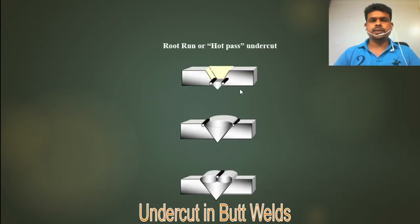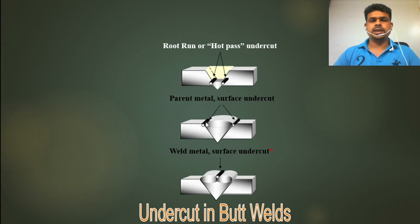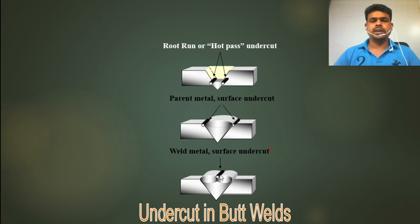From this slide you can see — this is the root run welding. Before a hot pass, there is undercut here. This is the root run or hot pass undercut, which we call the interrun undercut. Another type is the parent metal surface undercut. The continuous undercut is where some places are undercut, then good, then intermittent. Another type is the weld metal surface undercut — in between passes if you have sharp edge, depth, and length, that is also considered weld metal surface undercut.